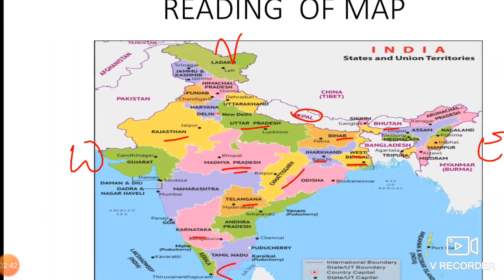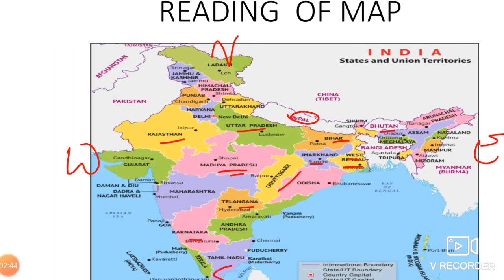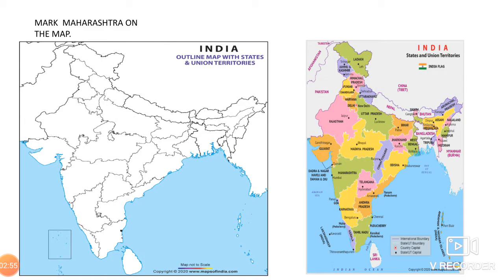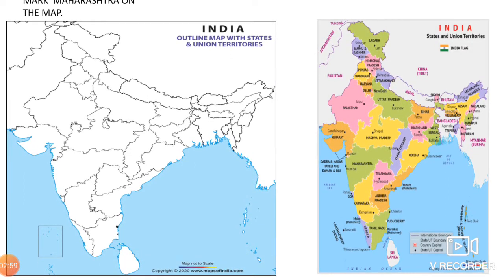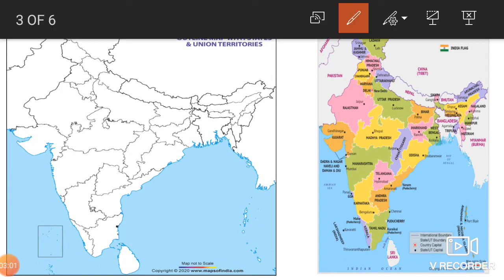So, north is up, south is down below, east is this side, and west is this side. These are all different states marked with different colors. As we live in Maharashtra, we are going to mark Maharashtra on the map — M-A-H-A-R-A-S-H-T-R-A.